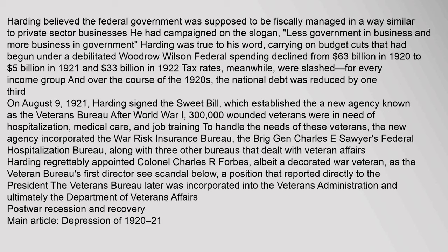Harding believed the federal government was supposed to be fiscally managed in a way similar to private sector businesses. He campaigned on the slogan 'less government in business and more business in government.' Harding was true to his word, carrying on budget cuts that had begun under a debilitated Woodrow Wilson. Federal spending declined from $6.3 billion in 1920 to $5 billion in 1921 and $3.3 billion in 1922. Tax rates were slashed for every income group, and over the course of the 1920s, the national debt was reduced by one third.